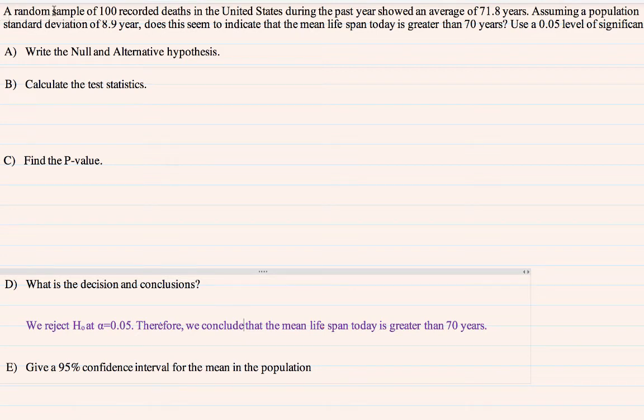A random sample of 100 recorded deaths in the United States during the past year showed an average of 71.8 years. Assuming a population standard deviation of 8.9 years, does this seem to indicate that the mean life span today is greater than 70 years? Use a 0.05 level of significance.